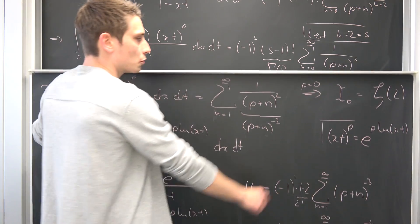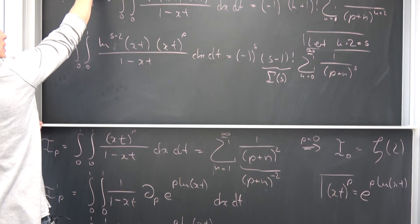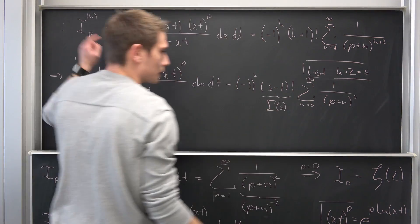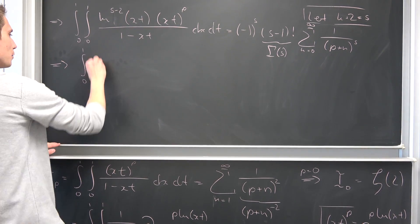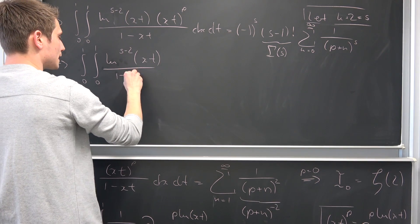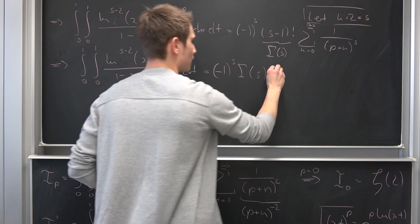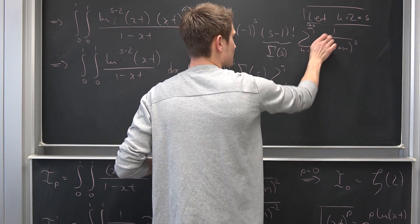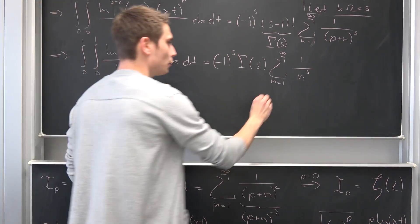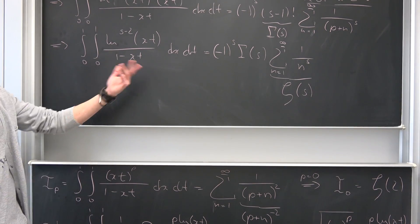Now we do the same trick as before: let p approach 0. The k-th derivative of I evaluated at p equals 0 gives us x times t to the 0th power, which is just 1, and p equals 0 on the right side. So we get the double integral of natural log to the (s minus 2) power of (x times t), over (1 minus x times t), integrated with respect to x and t — equals negative 1 to the s power, times gamma of s, times the sum from n equals 1 to infinity of 1 over n to the s power. That sum is zeta of s.